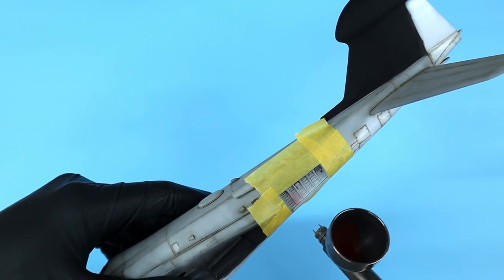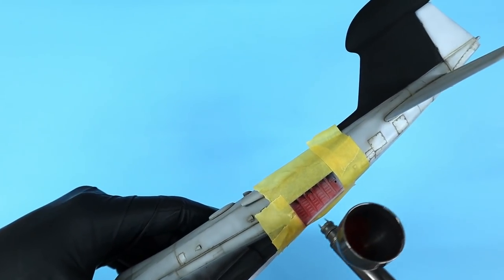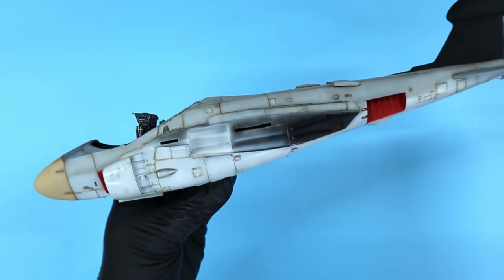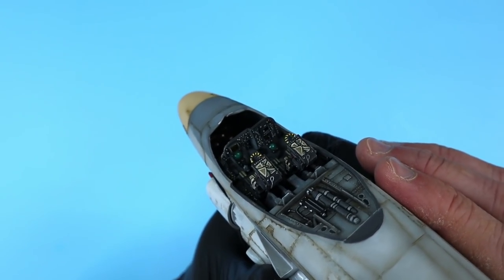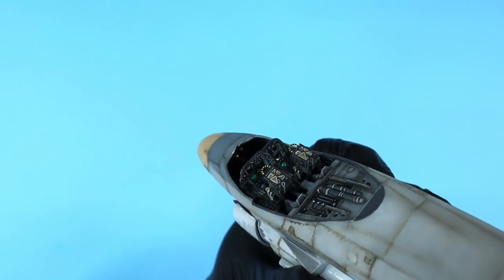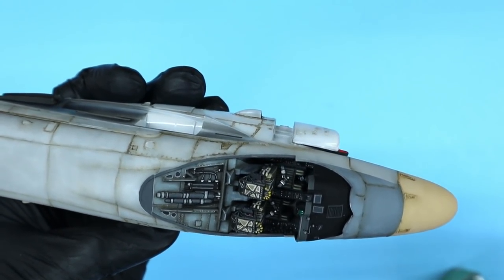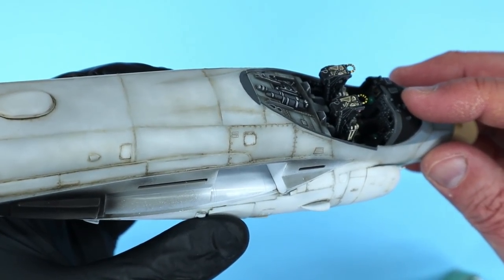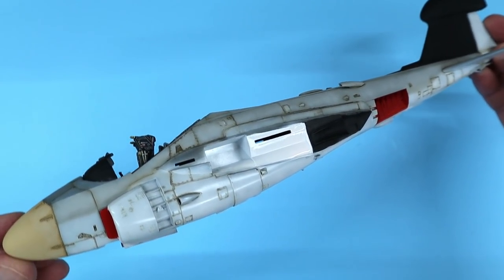I masked and sprayed the speed brake areas with Tamiya flat red and added an oil wash to bring out the nice details in those areas. Before I permanently installed the instrument combing, I mixed up some five-minute epoxy and added some brass balls to the mixture. I then dropped those into the nose section to make sure I didn't end up with a tail sitter. I then fitted the instrument combing and glued it in place over the instrument panel. Here's a look at the completed fuselage assembly.